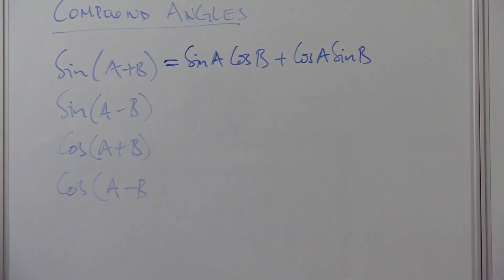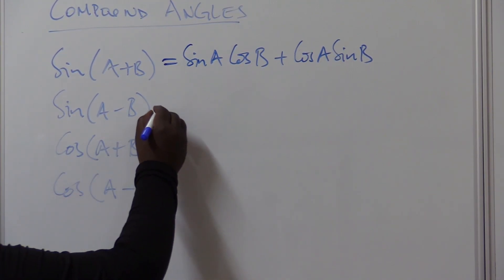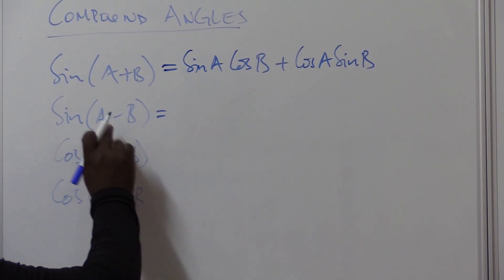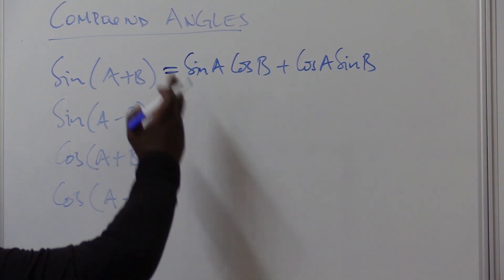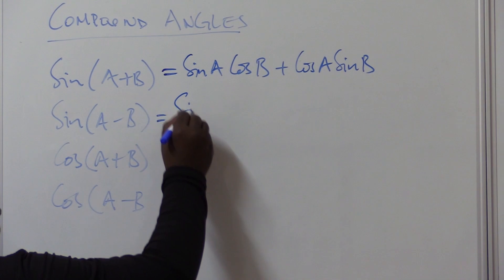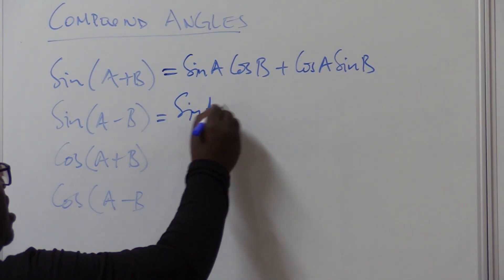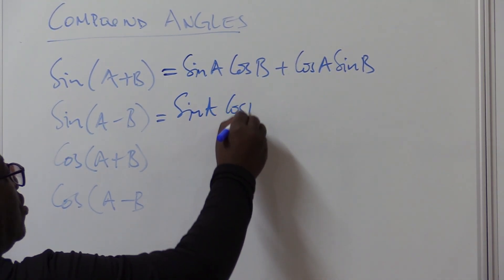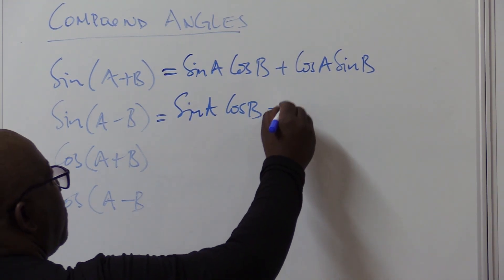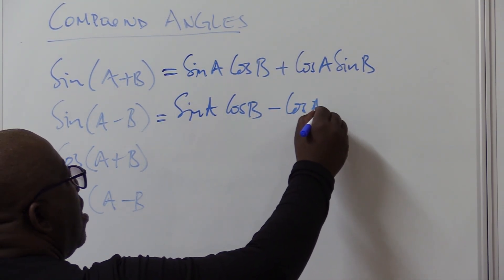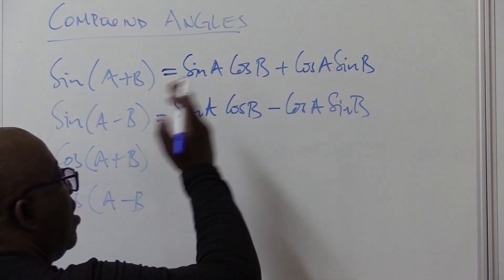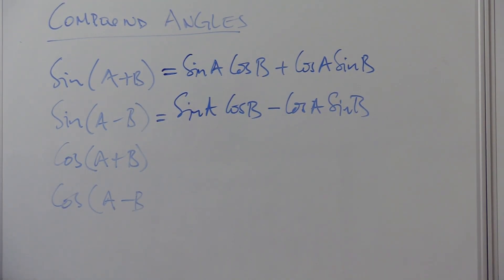Remember we are giving this in a formula sheet as well. Let's go to the negative one. This is still sine, but we keep the same sign. The rhythm is sine cos, cos sine. Let's write it down. So this is the same as sine A cos B — keep the same sign, which is minus — cos A, sine B. Sine cos, cos sine. That's how you go about doing it.